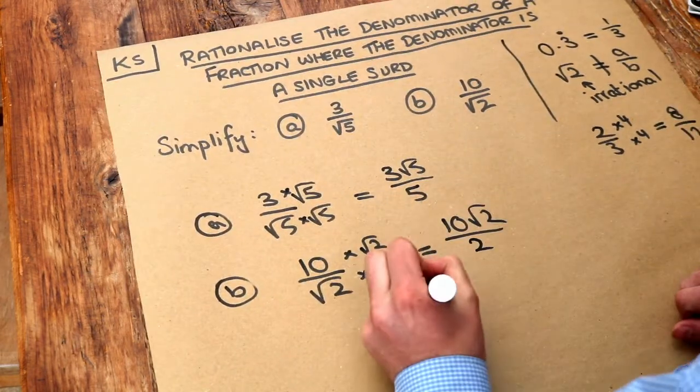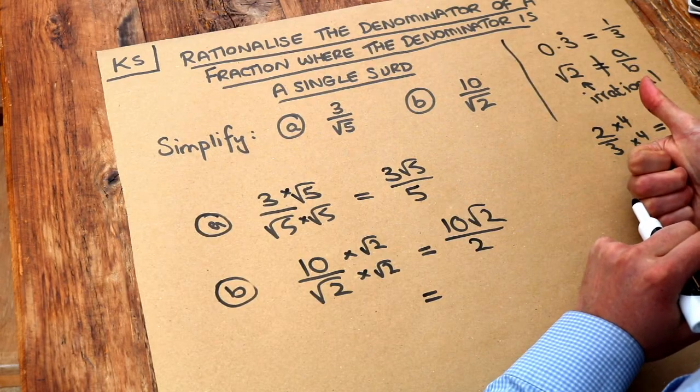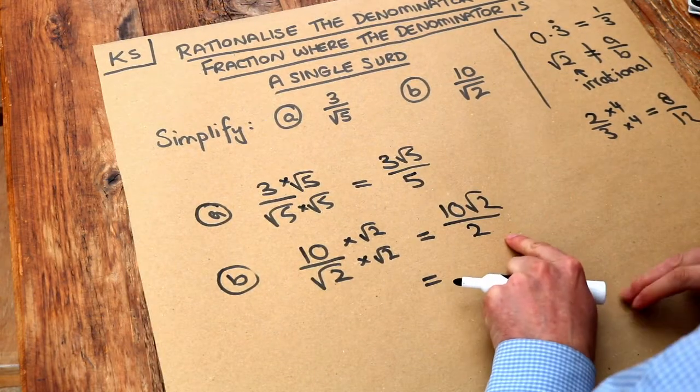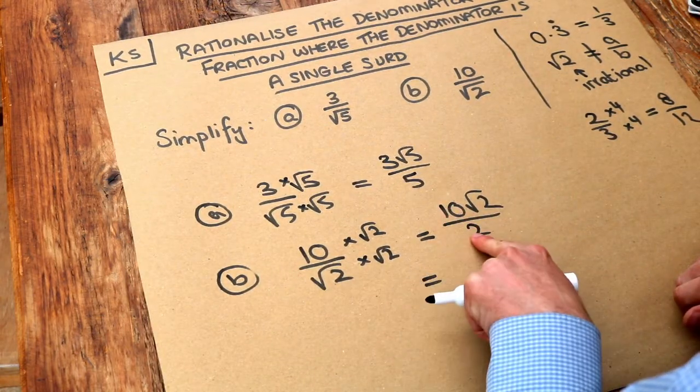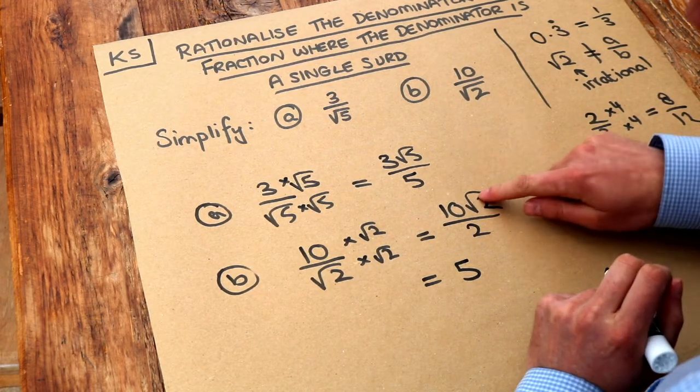Now this one we can simplify, because remember in our video when dividing surds, we first divide any non-surds and then we divide any surds. So the non-surds are the things without the square roots - the 10, the 2. 10 divided by 2 is 5, and then we divide the surds.